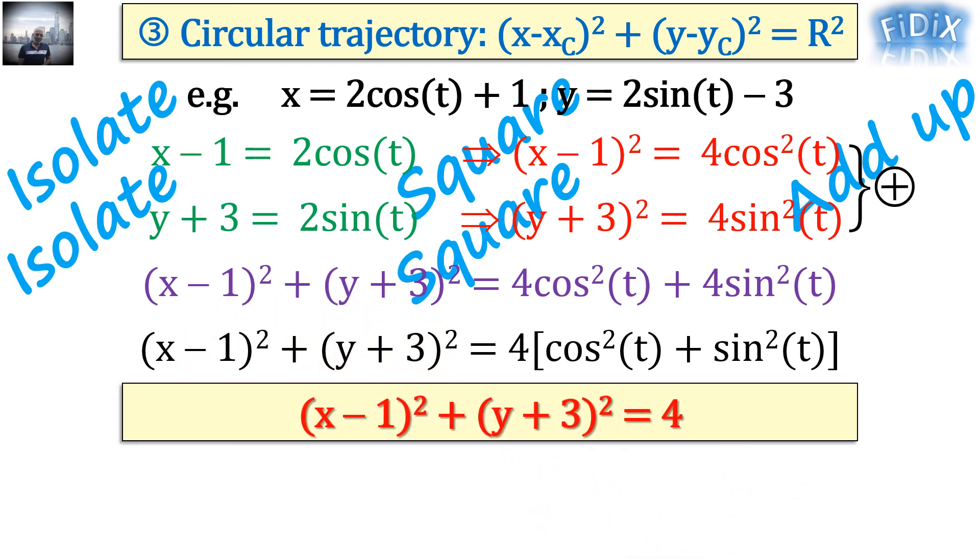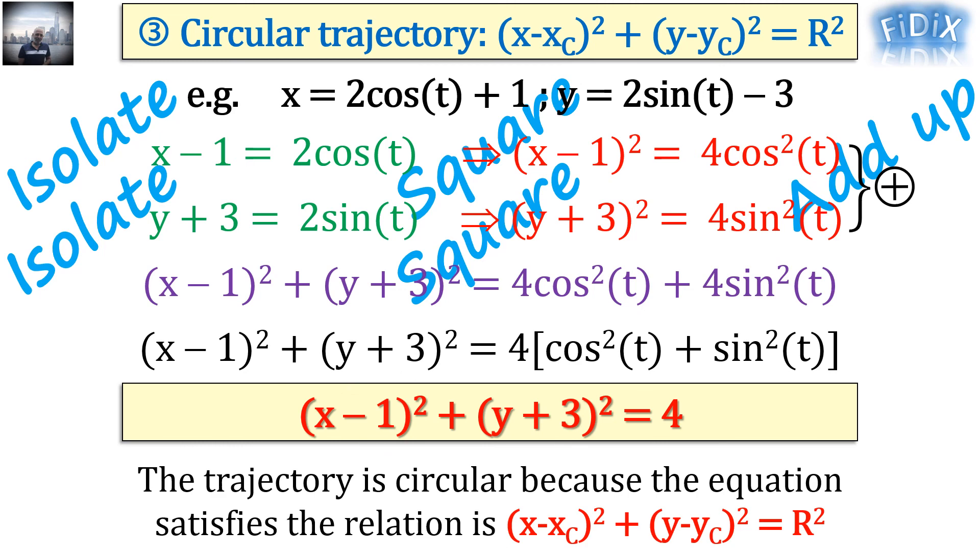In our case we get an equation that satisfies the one of a circle of radius r equals 2, having a center c of coordinates x_c equals 1 and y_c equals minus 3. Note that if we were working in the international system of units SI, all these values would be in meters.